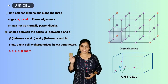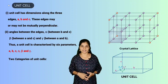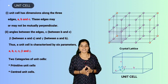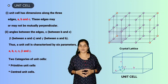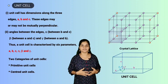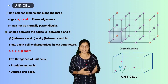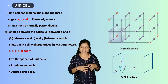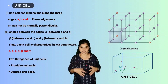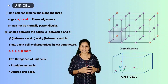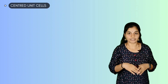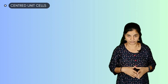Unit cells are classified into two types: primitive unit cells and centered unit cells. When constituent particles are present only at the corner positions of the unit cell, it is known as a primitive unit cell. When particles are also present at other positions in addition to the corners, they are known as centered unit cells, based on the position of atoms other than at the corner positions.